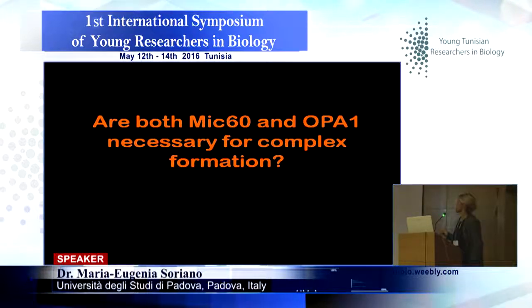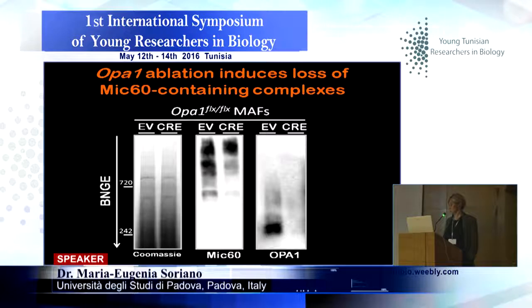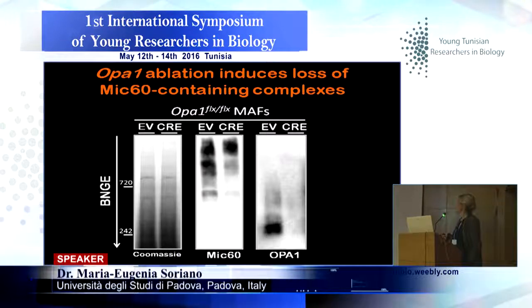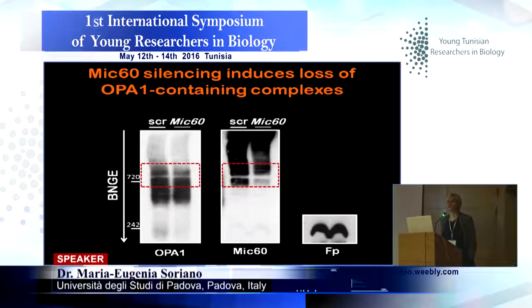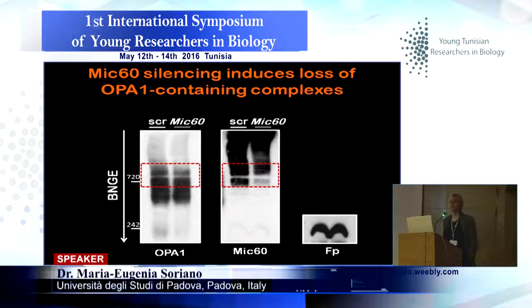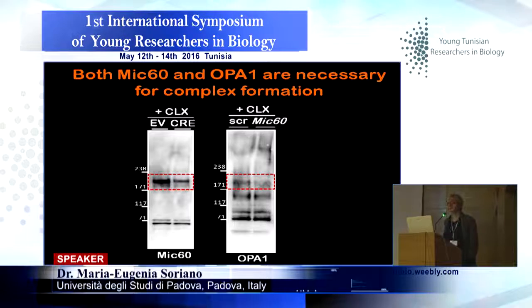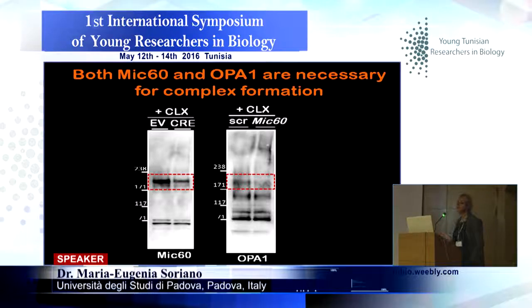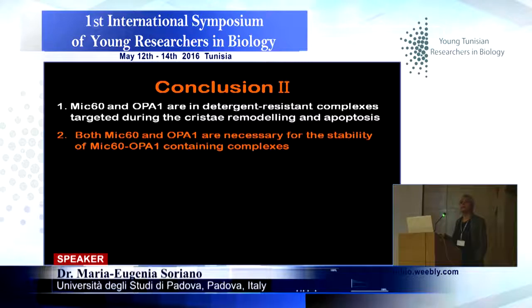The next question we asked was: are both MIX16 and OPA1 necessary for the formation of this complex? We treated cells with Cre recombinase, isolated mitochondria, extracted the complexes, and looked for the mitofilin complexes. After OPA1 ablation, the MIX16 complexes decrease — and OPA1 was absent confirming successful ablation. When mitofilin was silenced, the OPA1 complexes also decrease, meaning both proteins appear to be necessary for the formation of the complex. We confirmed the same result with cross-linking: both OPA1 and MIX16 complexes decrease at the same molecular weight after silencing of the other protein, confirming that both proteins are necessary for the stability of these complexes.